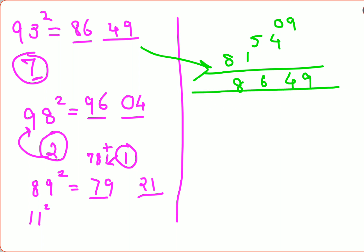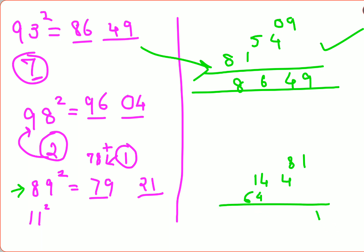If remembering different methods is difficult, just stick to the universal one. Let's verify 89 squared: 9 squared is 81, then 8 times 9 times 2 equals 144, then 8 squared is 64. Adding gives 7921 — the same answer as before.